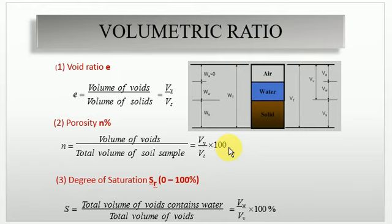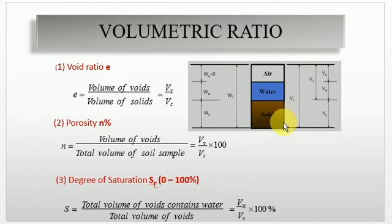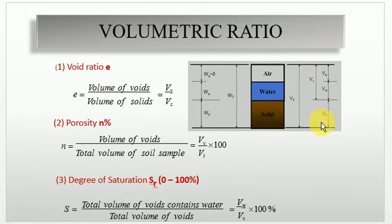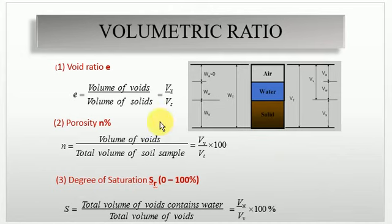In all geotechnical engineering equations we use void ratio, because in geotechnical engineering, soil mechanics, and foundation engineering we deal with soil solids. In porosity the denominator is total volume, which includes volume of solids, volume of water, and volume of air. But for functional use in geotechnical engineering we deal with soil solids only, because the total strength of a soil sample depends only on soil solids. That is why we use void ratio instead of porosity.